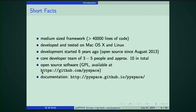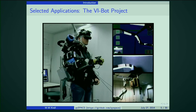The development of the software started six years ago, but it became only open source recently in August 2013. There's a core developer team of three to five people, and approximately ten developers in total — but developer mainly means people who are integrating their algorithms to later test them. It's open source software under GPL, available on GitHub, along with documentation. I'll tell you a bit about the applications and the motivation for developing this framework.